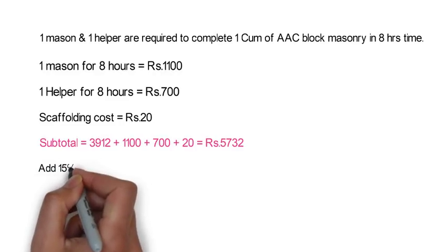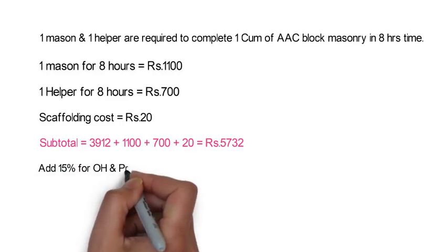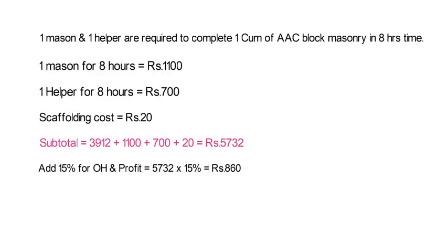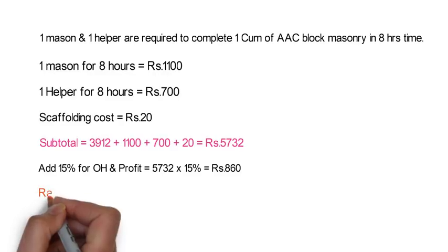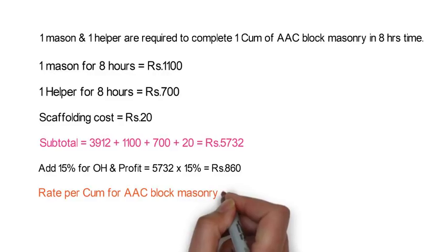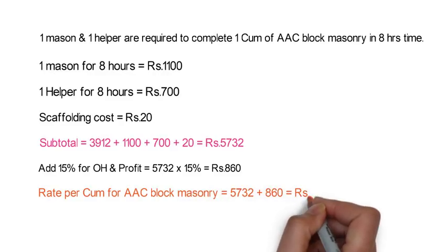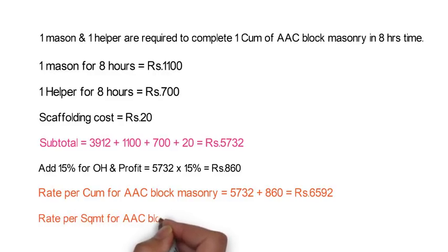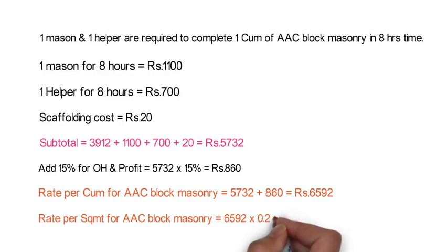Now add 15% for overhead and profit: 5,732 x 15% is equal to 860 rupees. So the final rate per cubic meter for AAC block masonry is 5,732 plus 860 is equal to 6,592 rupees. We can convert it to square meter by multiplying by the block thickness of 0.2 meter: 6,592 x 0.2 is equal to 1,318 rupees per square meter.